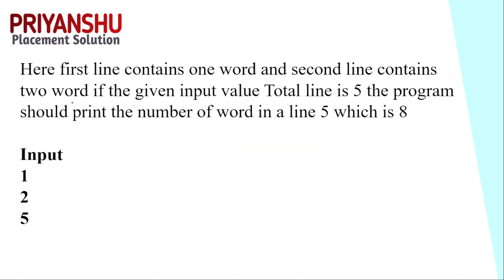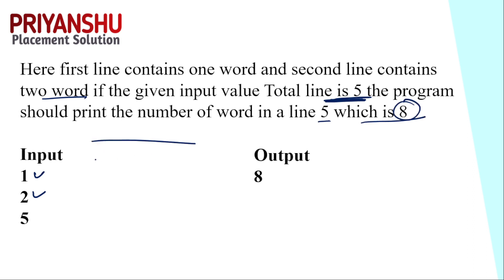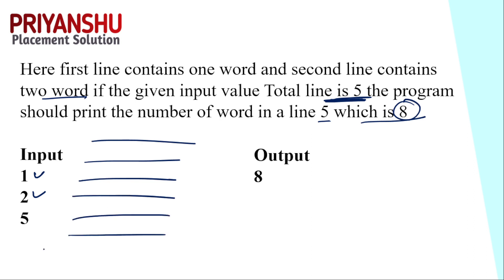Let's see the input and output. The first line contains one word and the second line contains two words. We need to print the number of words on line five total — the output is eight. Example: first line has 1, second line has 2, third line is 3, fourth line is 5, fifth line is 8. So on the fifth line, eight is there.